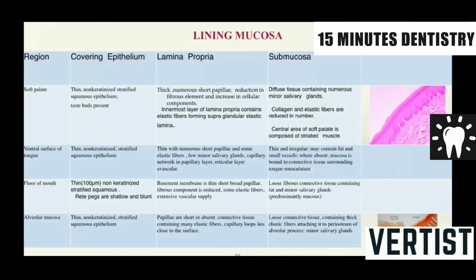Coming to the lining mucosa. The lining mucosa covers the soft palate, ventral surface of the tongue, floor of the mouth, and the alveolar mucosa — all of these are basically non-keratinized. The soft palate has minor salivary glands and elastic fibers that are reduced in number. The ventral surface of the tongue is very pliable with short papillae, elastic fibers, and some salivary gland tissue. In the floor of the mouth, the basement membrane is thin, short papillae are present, and the submucosa consists of loose fibrous connective tissue and minor salivary glands.